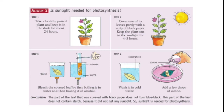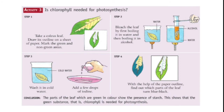Wash the leaf in cold water, place it in a petri dish, put some drops of iodine, and observe the color. You will find that the part of the leaf covered with black paper does not turn blue-black. This part does not contain starch because it did not get any sunlight. This proves that sunlight is needed for photosynthesis.